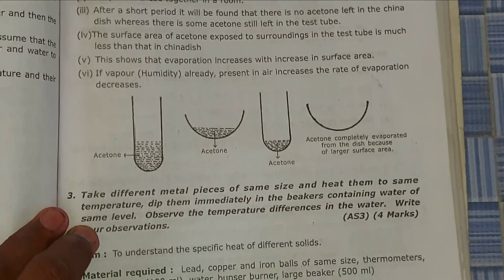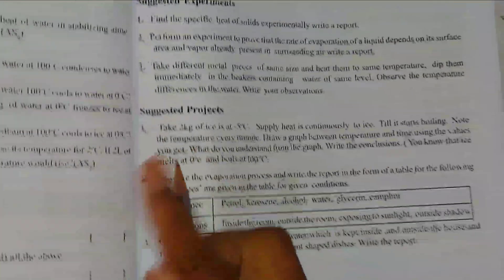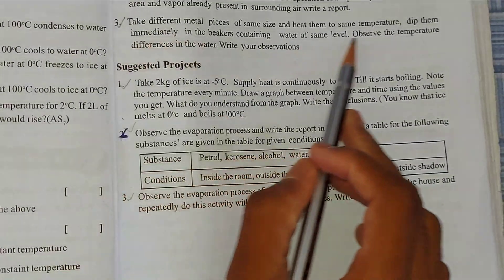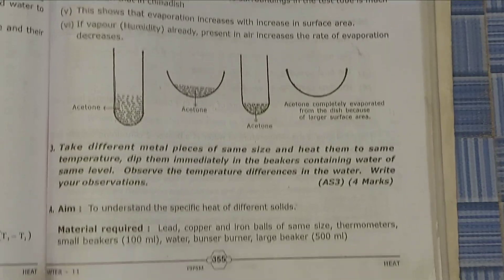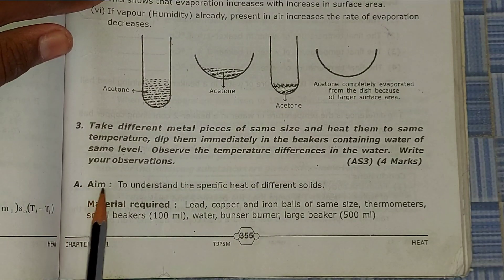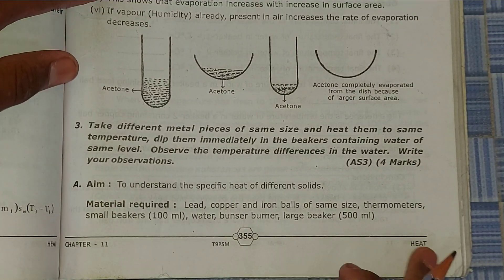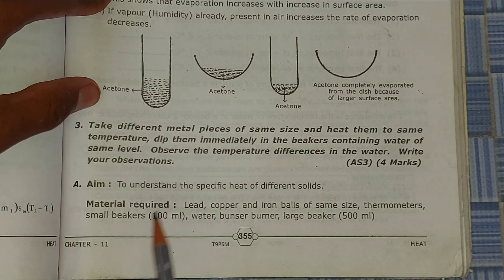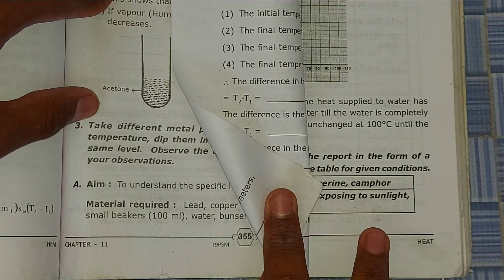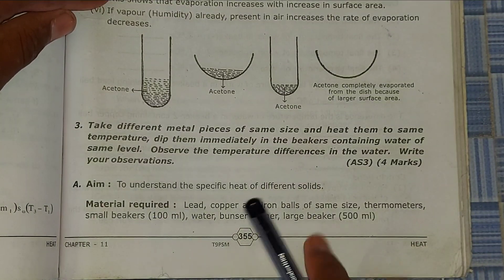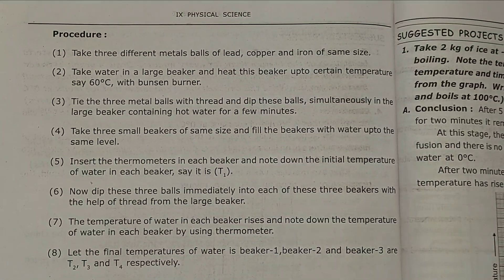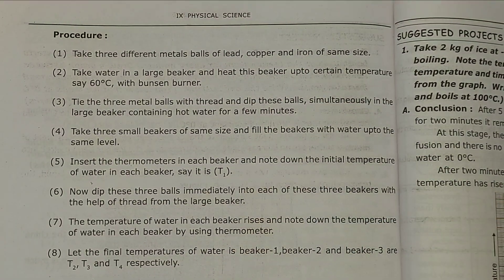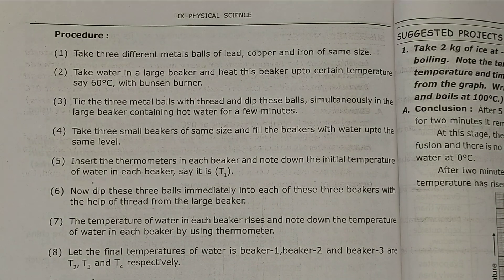Now I will go to the third question. First let's see the third question in the textbook. Now see the third question answer in the Question Bank. The answer has three lines on this page and continues on the next page. You can see this is all the third question answer. We move to the next page to see the complete answer.